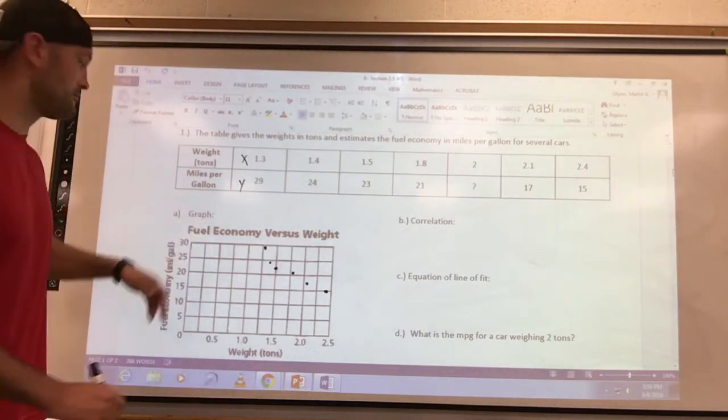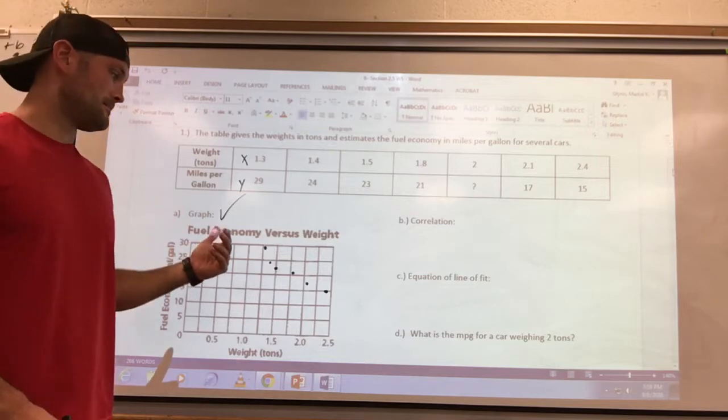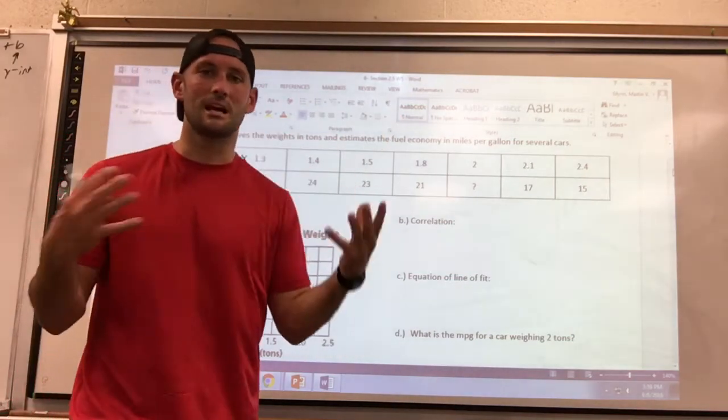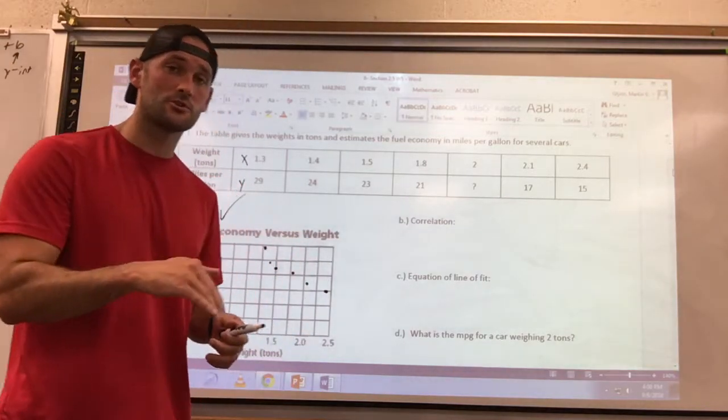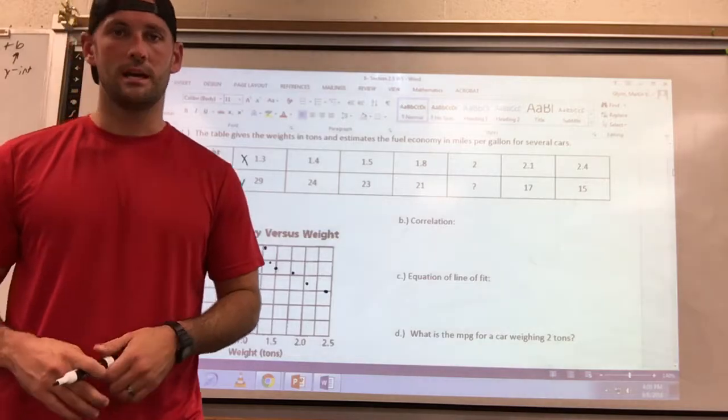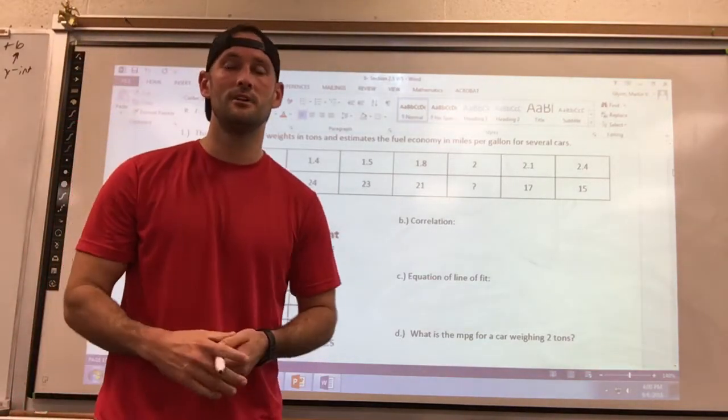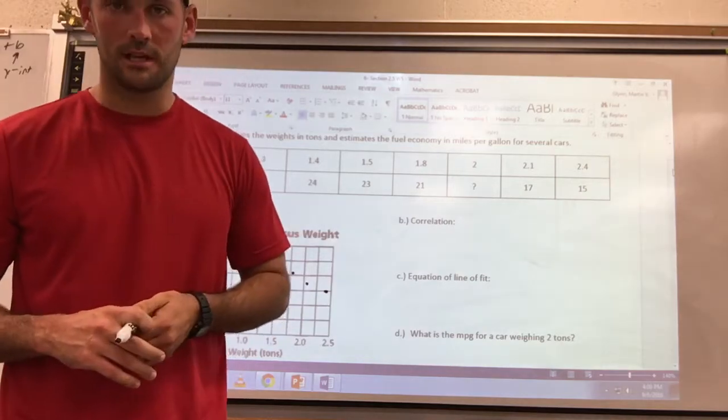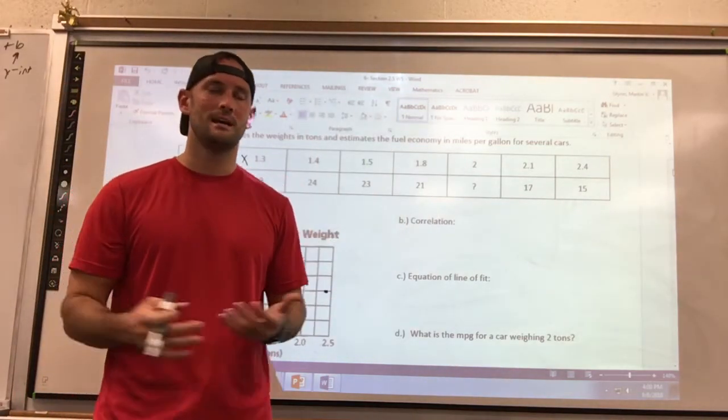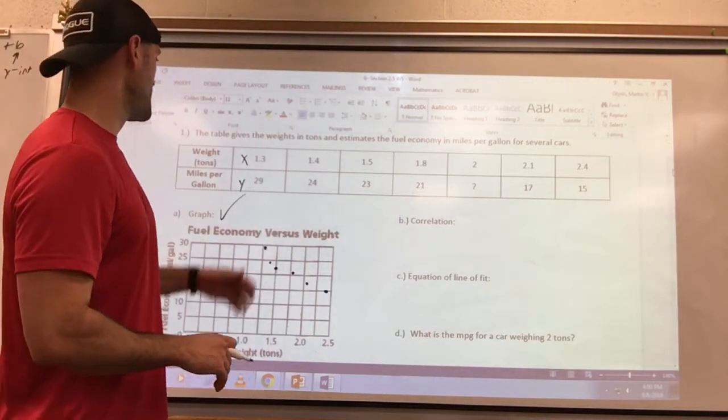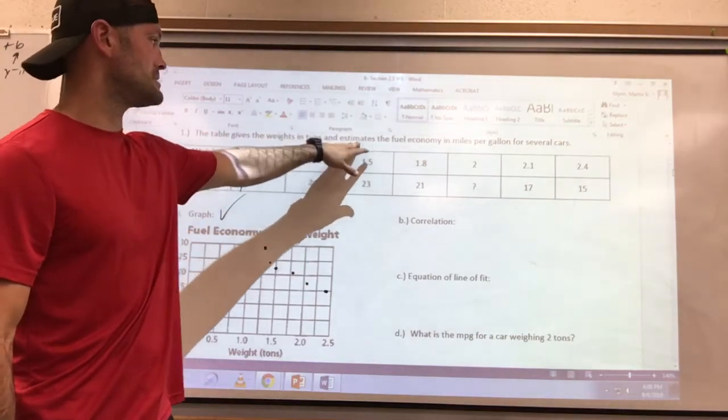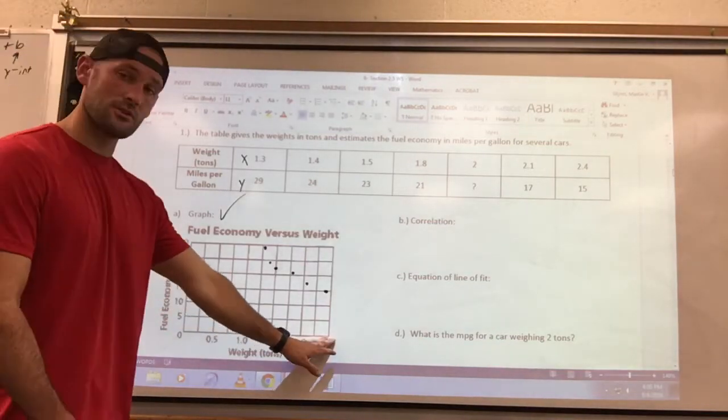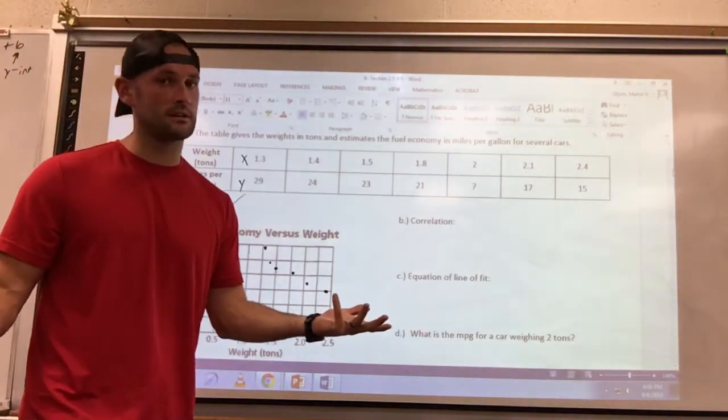Now we just took care of the graph - check, nailed it. All right, correlation. Now you can take a look at these plots and they start to make sense of: is there an upward trend or a downward trend, or does it just look like chicken pox all over the place? If there is a downward trend, which is what we have here, that's called a negative correlation. Think money - if you see investing and money is going down, that has a negative impact on your life, so negative correlation. Obviously, if your money is rising, that's a positive correlation. If it's just all over the place, that is no correlation. So I have a negative correlation going on here. It says weight in tons and estimates the fuel economy in miles per gallon of several cars. That's realistic, so the heavier the car gets, the less fuel economy.